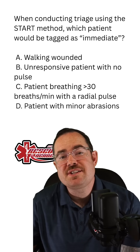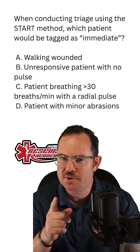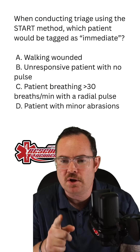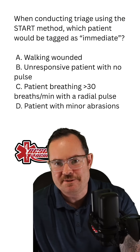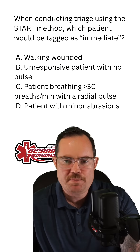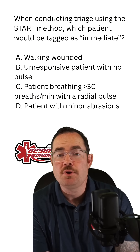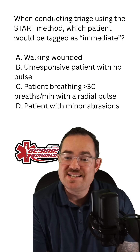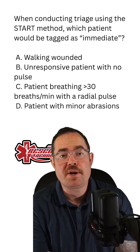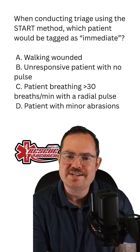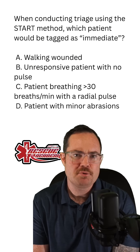When conducting triage using the START method for adults, which patient would be tagged as immediate? Would it be A, walking wounded; B, unresponsive patient with no pulse; C, patient breathing greater than 30 breaths per minute with a radial pulse; or D, patient with minor abrasions?